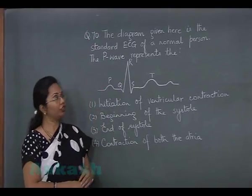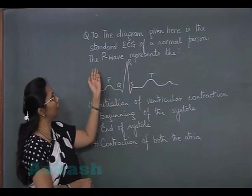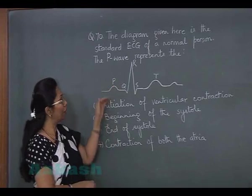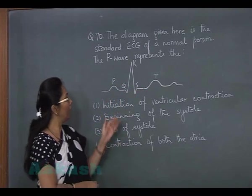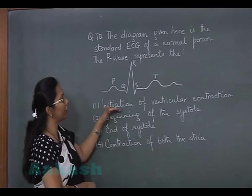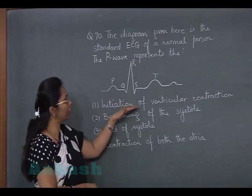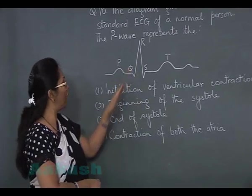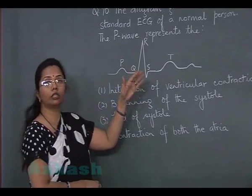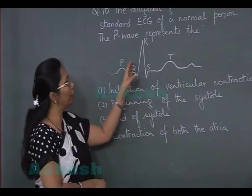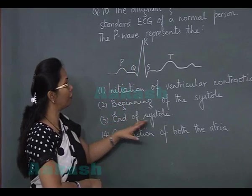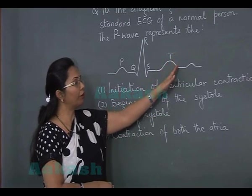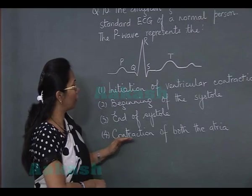Question number 70: the diagram shows a standard ECG of a normal person, and we need to identify what the P wave represents. The options are: initiation of ventricular contraction — which occurs after the beginning of the Q wave; beginning of systole — also starts after the Q wave; and end of systole — ventricular systole continues up till the T wave.